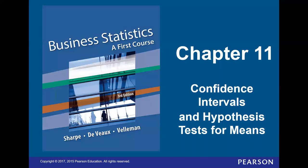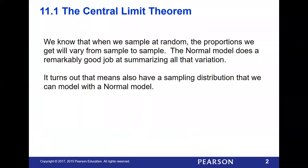Hello class and welcome to chapter 11 on confidence intervals and hypothesis tests for means. We are going to be going the next step and using more of these confidence intervals that we have been working on in the last couple of chapters and looking more at the hypothesis tests. When we take a sample at random from a population, we know that every proportion we get is going to be a little bit different in each sample. A normal model does a really good job at summarizing what type of variation we can see, giving us a sampling distribution we can model using that normal model.